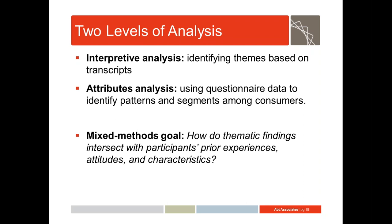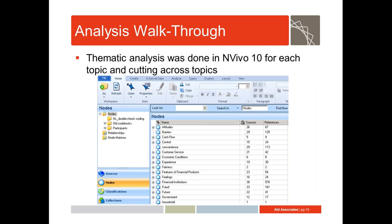This allowed us to understand at a deeper level not just that, for example, a preference to speak with somebody at a financial institution in person or over the phone was a common preference instead of going online, but also what kinds of people with what kinds of prior experiences might prefer one mode of interaction over another. Here I'm showing the way we set up our codebook — all the thematic nodes with sources and references showing the prevalence of themes overall in the qualitative data.